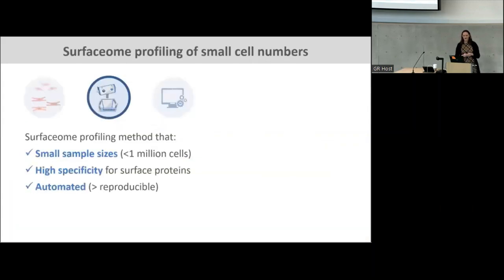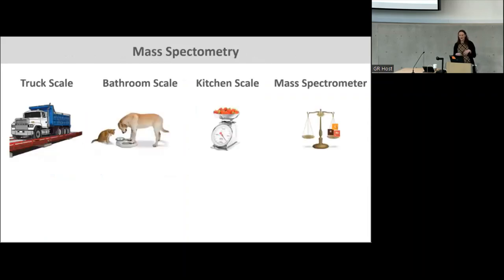Once we have these cells, we needed a method to identify the proteins that sit at the cell surface. We had to do this in a way that allowed us to start with really small sample sizes and something highly specific for surface proteins. The technology we use is mass spectrometry — an analytical tool. You can think of it like a balance: a truck scale measures the weight of a truck, a bathroom scale measures a person, a kitchen scale is smaller. A mass spectrometer is really a scale that measures molecules and atoms. With mass spectrometry, we can analyze the mass of molecules, identify what something is, characterize it, and quantify it — all without having any antibodies.